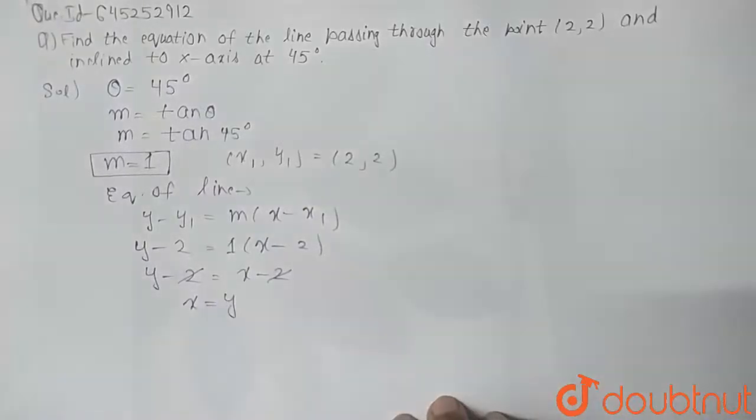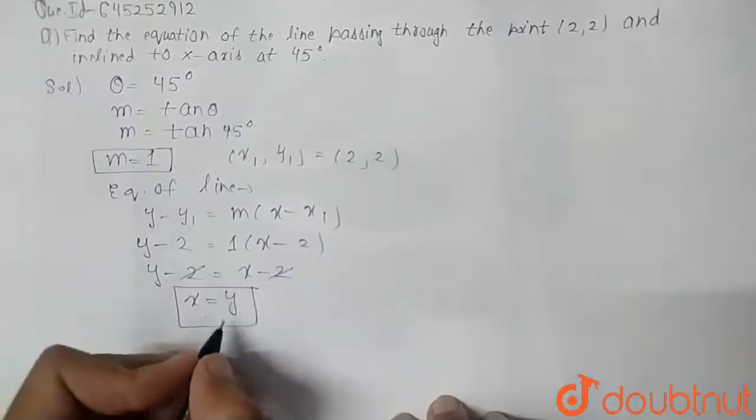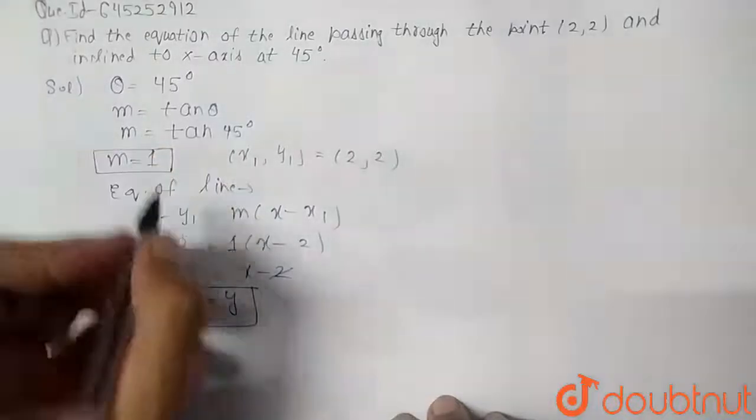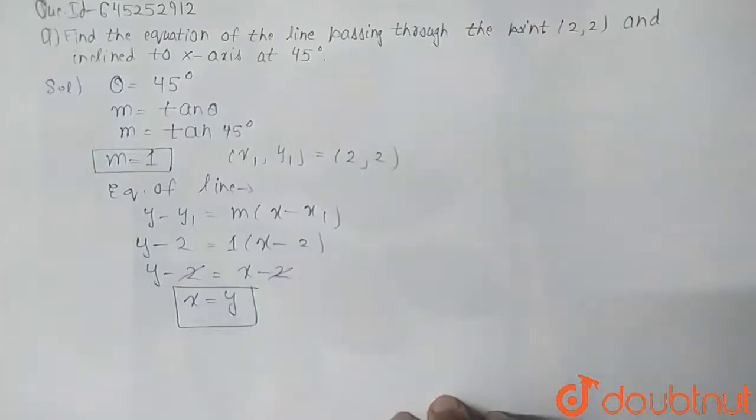So we can say that our required equation of line is x equal to y, which is inclined to 45 degree at x-axis.